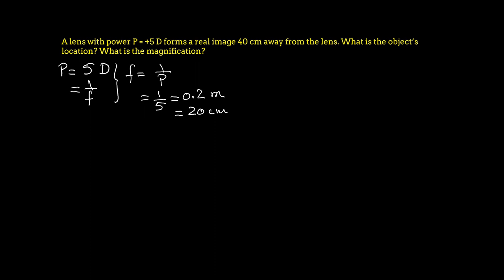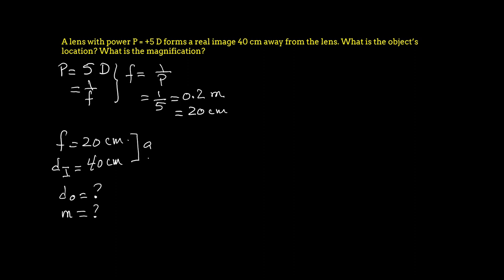So the focal length is 20 centimeters — that's the first thing we know. The lens forms a real image 40 centimeters away from the lens, so we're given di = 40 centimeters right away. We need to find the object's location do and the magnification m. Let's solve using the thin lens equation first, then verify with ray tracing.